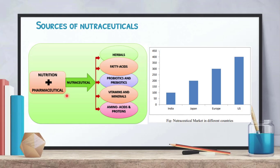Nutraceuticals are formed from nutrition plus pharmaceuticals. The highest market for nutraceuticals is in the USA, followed by Europe, then Japan and India, and it is also available in Pakistan.